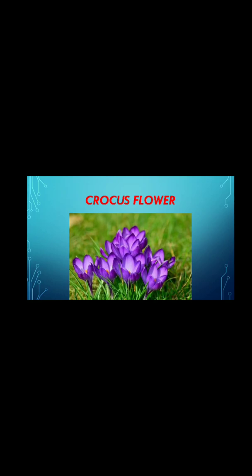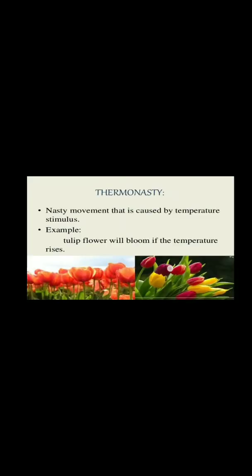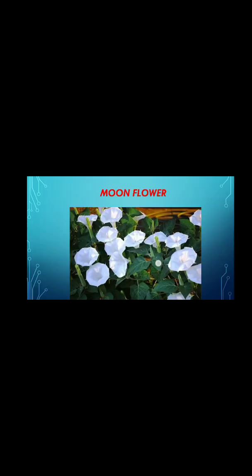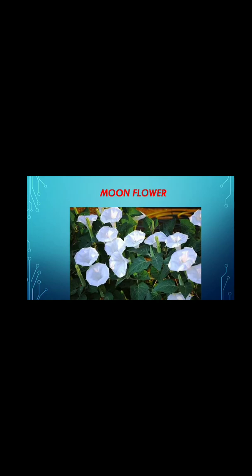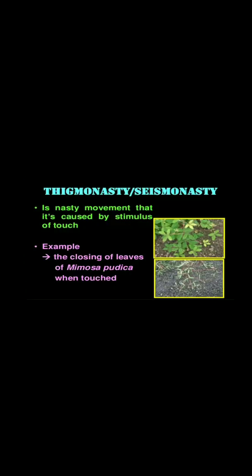Today we have seen three kinds of nastic movements. Photonasty is the movement of a plant part responding to light — examples are the Dandelion flower (Taraxacum officinale) and Ipomoea alba. Thigmonasty is the movement of a plant part in response to touch — examples are Mimosa pudica and Venus flytrap.